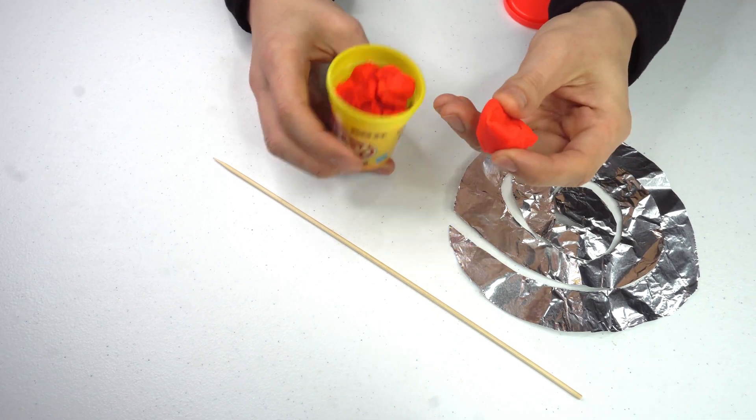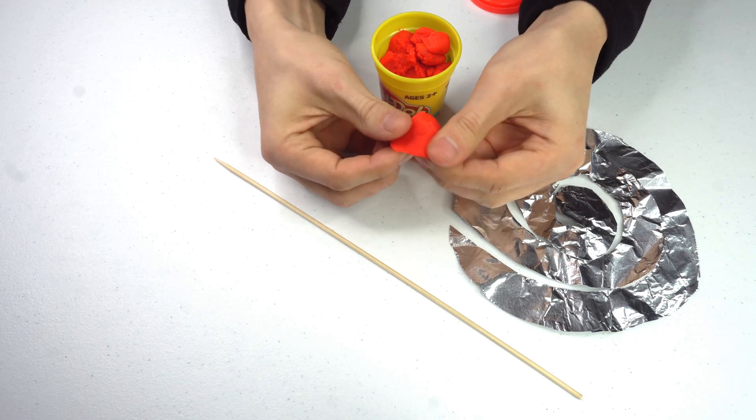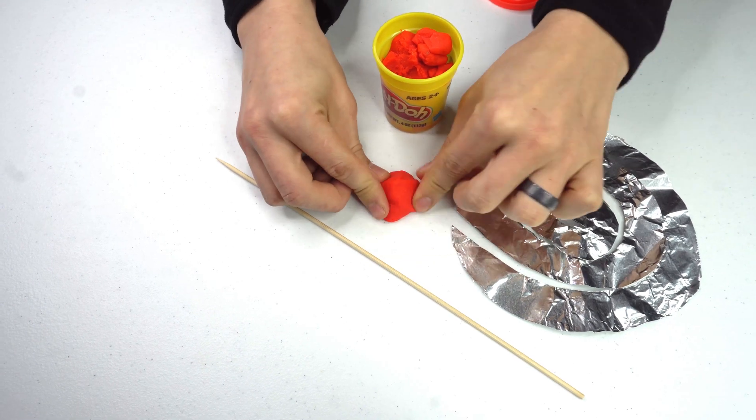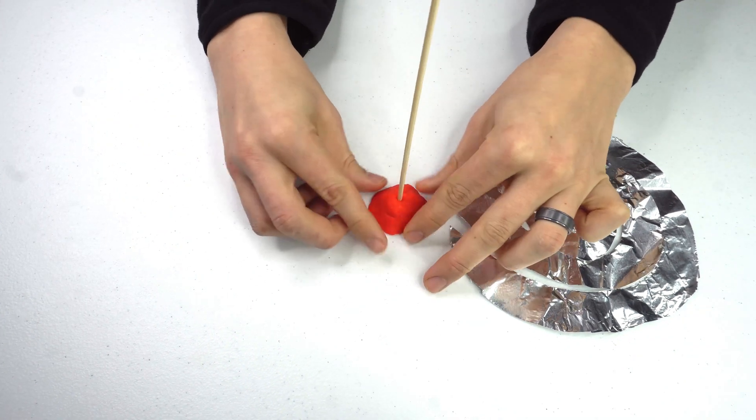Take a piece of that Play-Doh and shape it into a cone-shaped or pyramid-shaped structure that will be the base of the shish kebab skewer. Then take that skewer and poke it right into the middle so it stands upright.